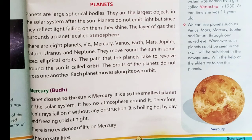Planets are large spherical bodies. They are the largest objects in the solar system after the sun. Planets do not emit light, but since they reflect light falling on them, they shine. The layer of gas that surrounds a planet is called its atmosphere.